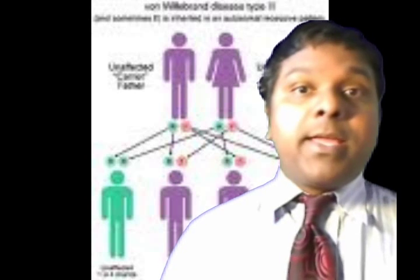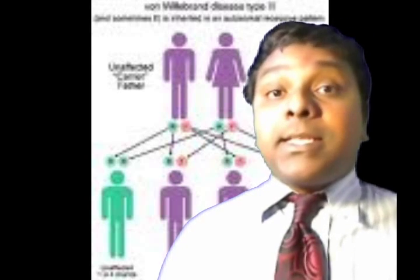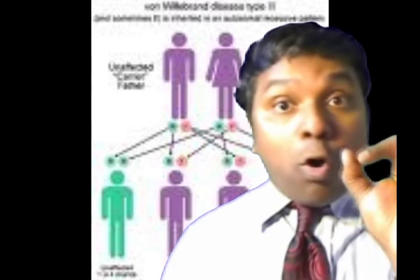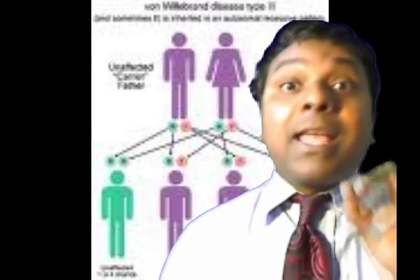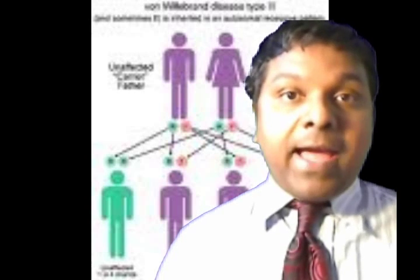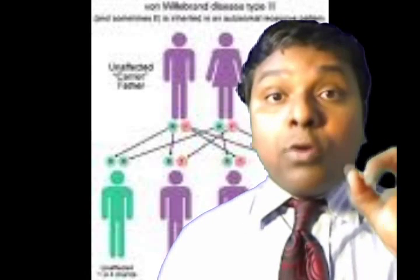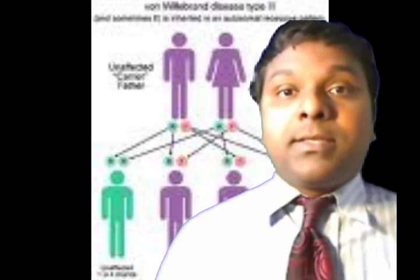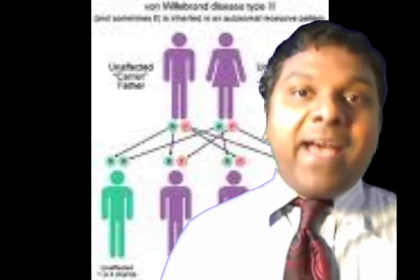Because PT and factor 8 are usually normal, it can sometimes be difficult to differentiate von Willebrand disease from mild hemophilia. Another interesting finding is that people with blood group O have a 30 percent reduction in von Willebrand factor compared to other blood groups.